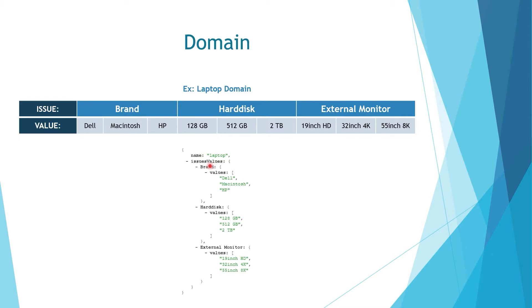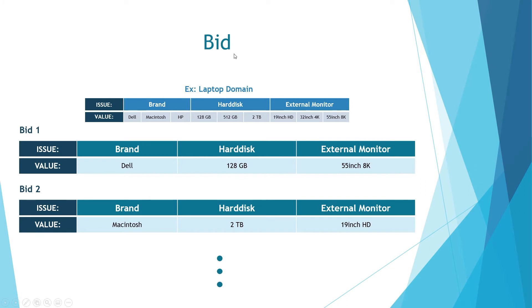You can see the name of the domain, the issues, and their values. Another component is bids. We offer bids in each round of the negotiation session, and the bids consist of values selected for each issue. For example, in a session based on the laptop domain, when we offer a bid we select a value for each issue — for brand, 128 gigabyte for hard disk, and 55 inch for external monitor. As you can see, for the laptop domain we have 27 possible bids that can be created from the domain.